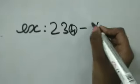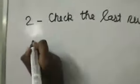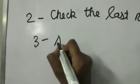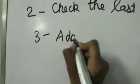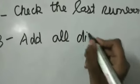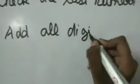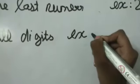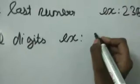For 3, we should add all digits. Example: if they give same 234, we should add 2 plus 3 plus 4.